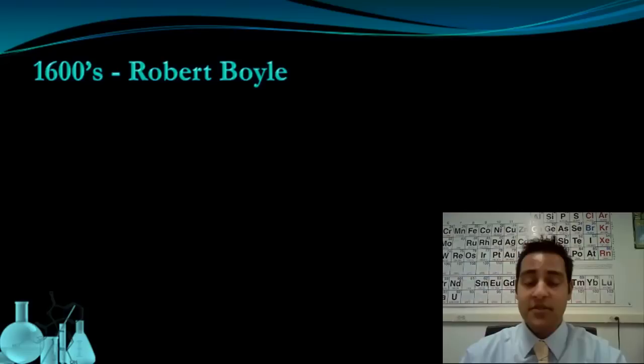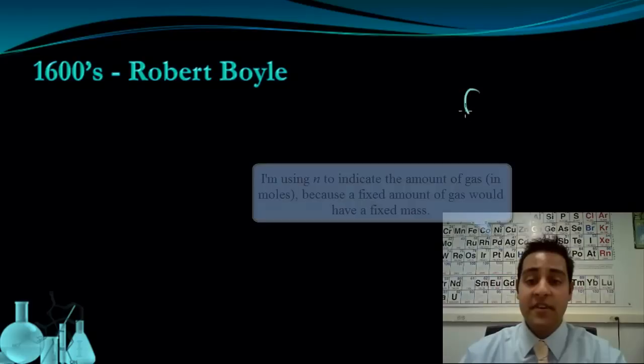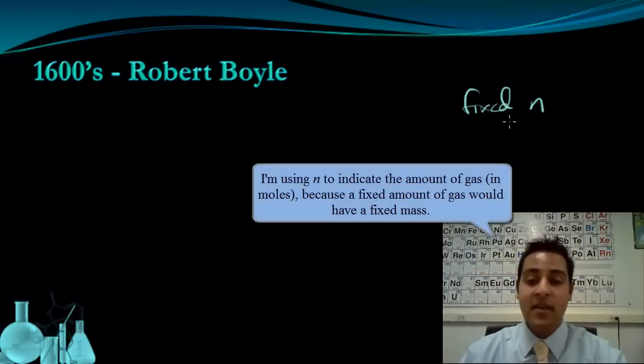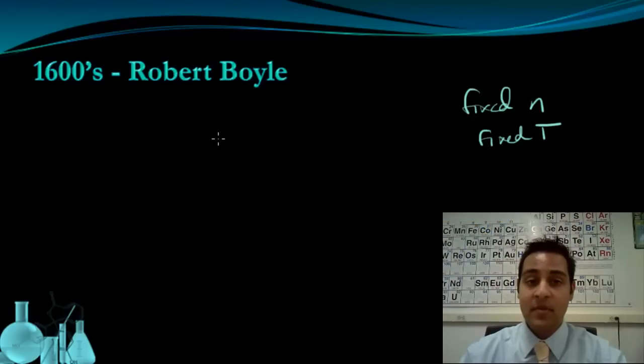Robert Boyle studied the relationship between pressure and volume for gases in the 1600s. He was able to conclude that for a fixed mass of a gas at a fixed temperature, pressure and volume have an inverse relationship. And this became known as Boyle's Law.